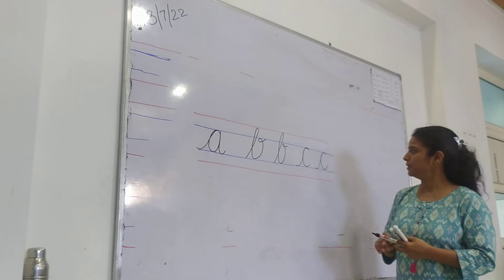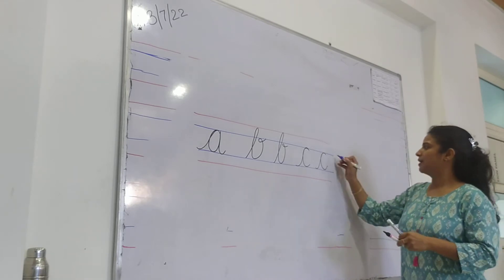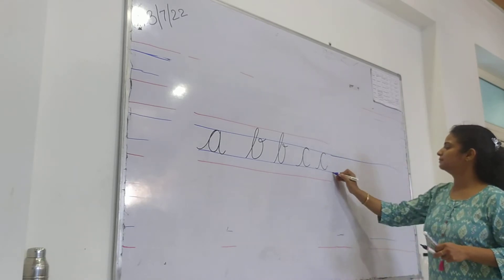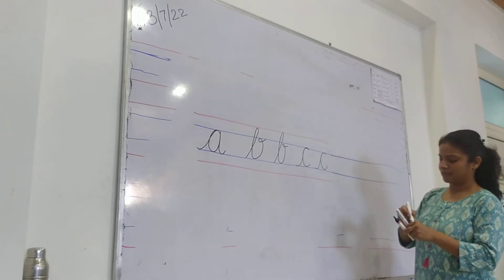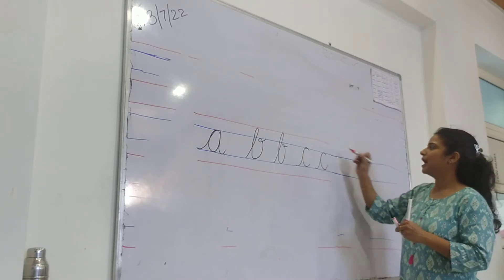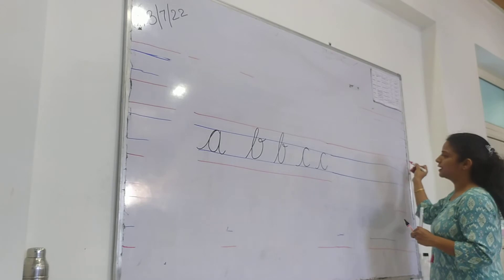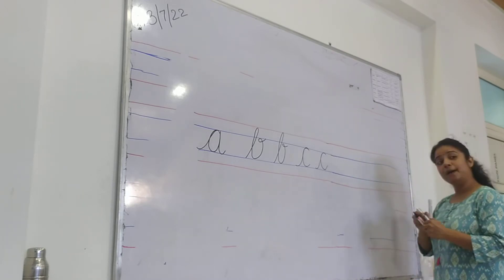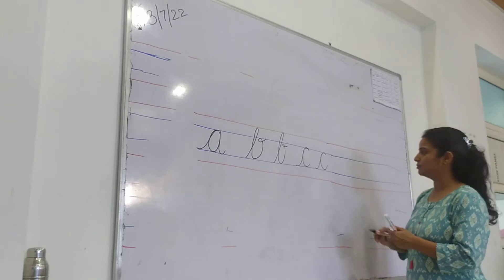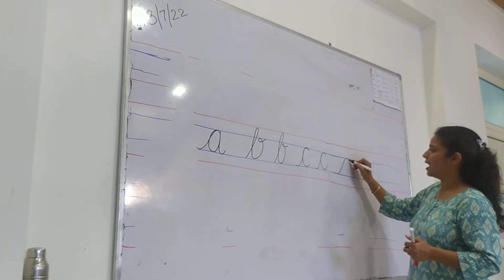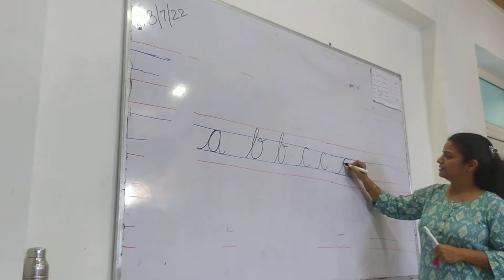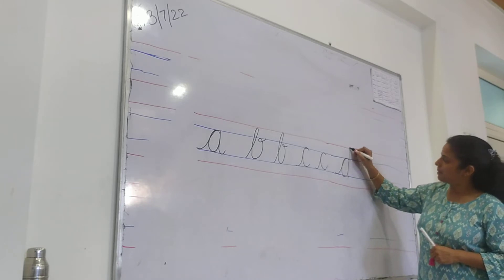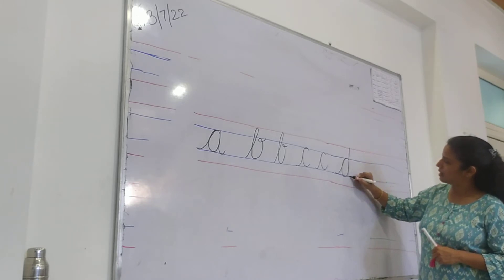Okay, now how do we write letter D? How do we write letter D? Can be the formation, can be the formation. Up, down, up, down, out.